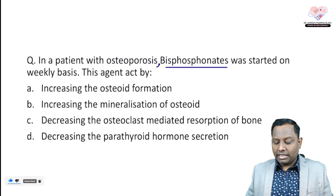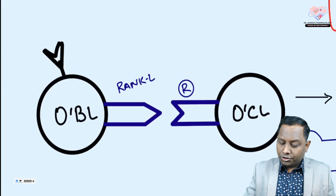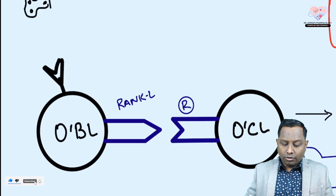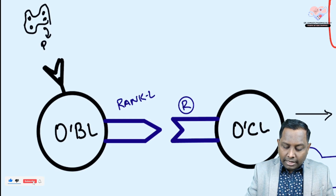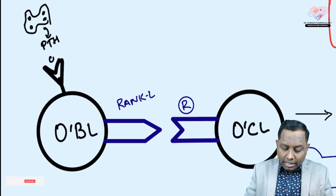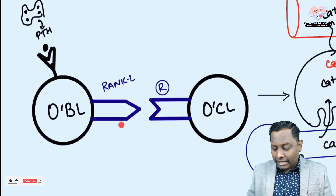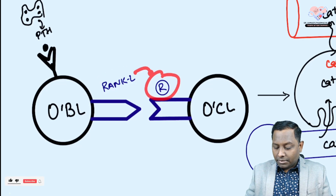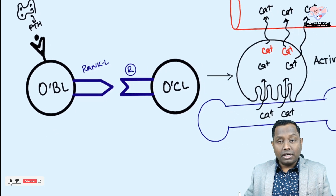Before discussing the answer, here's a key image. Osteoclast activation is influenced by parathyroid hormone, released from the parathyroid gland. Parathyroid hormone never acts directly on osteoclasts — it acts on osteoblasts, and on osteoblasts it increases RANK ligand. RANK ligand then mediates activation of osteoclasts via the RANK ligand receptor on the osteoclast surface.